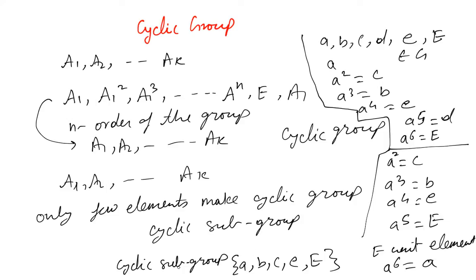So each group has a cyclic subgroup, and when all the elements repeat itself then it's a complete cyclic group.